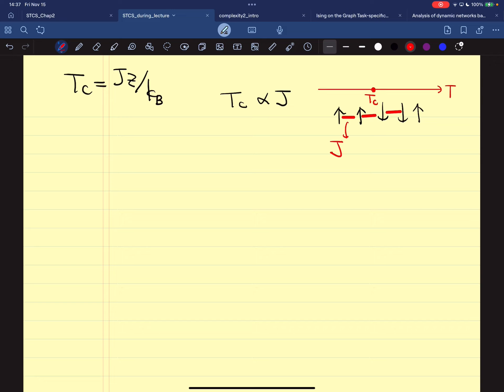The meaning of TC is that above TC, there is a disordered phase, and below TC is the ordered phase.